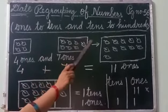Look here children. In this box — this box is one group. This is one group and this is another group. In one group, how many links are there? 1, 2, 3, 4 links are there. That's why it is written 4 ones.